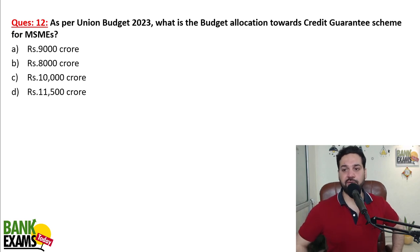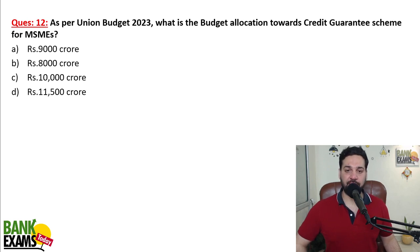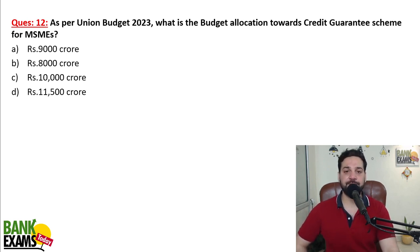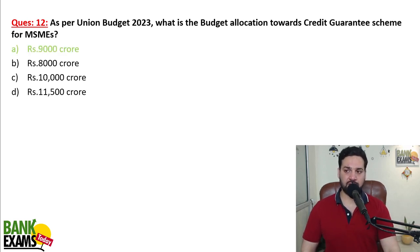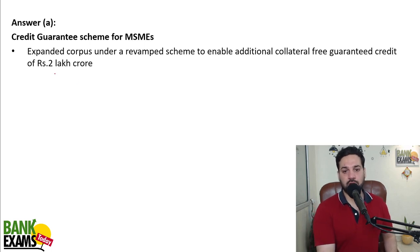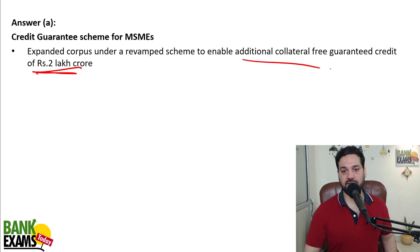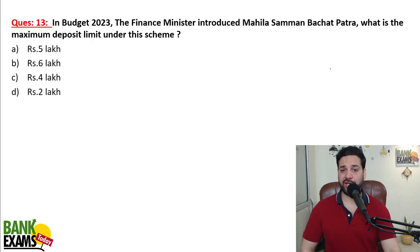As per Union Budget 2023, what is the budget allocation towards the credit guarantee scheme for MSMEs? The fund for MSMEs was created so that collateral-free loans can be given to MSMEs. 9,000 crore has been allocated and now up to 2 lakh crore ka additional collateral-free loan diya jayega.